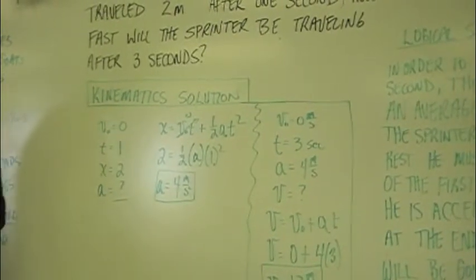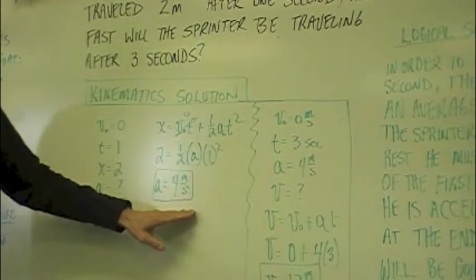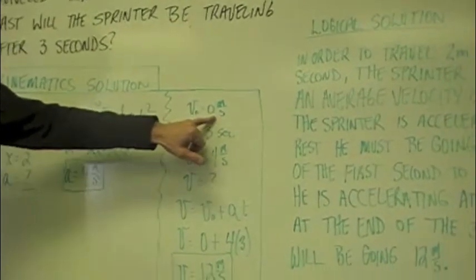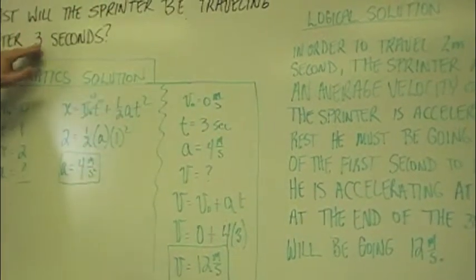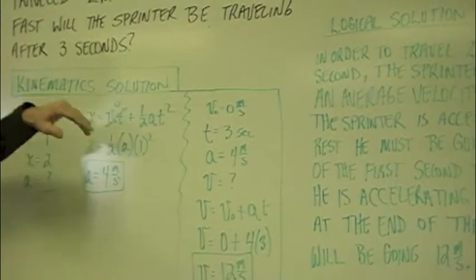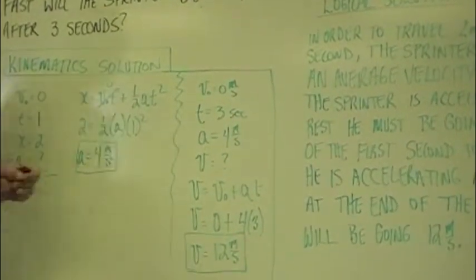Does that make sense? Now with an acceleration of four meters per second squared, velocity naught is zero, and we're figuring out how fast we're going after three seconds.